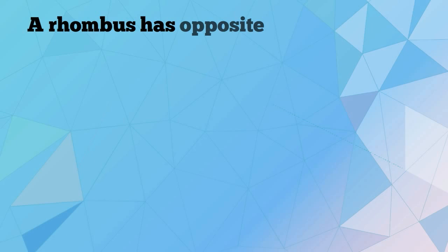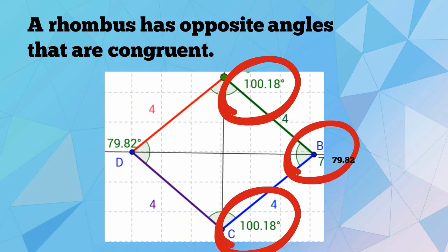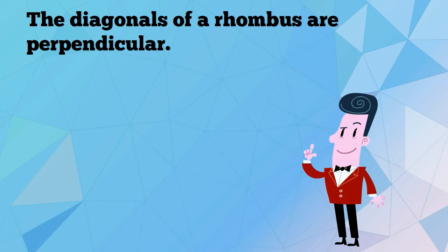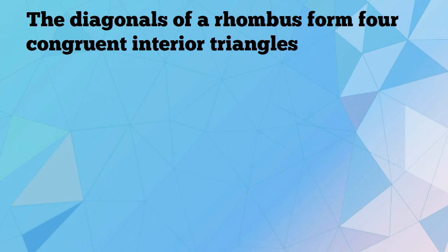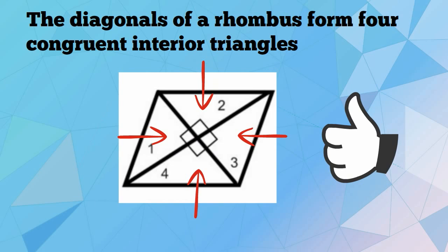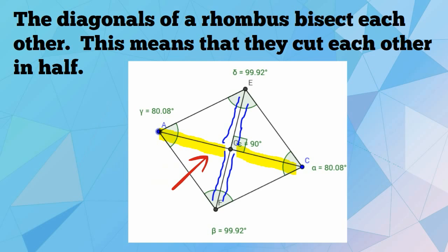A rhombus has opposite angles that are congruent. The diagonals of a rhombus are perpendicular. The diagonals of a rhombus form four congruent interior triangles. The diagonals of a rhombus bisect each other, which means that they cut each other in half.